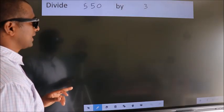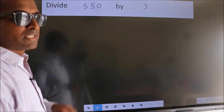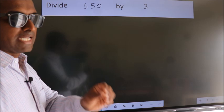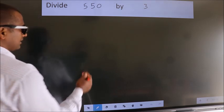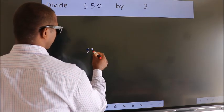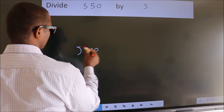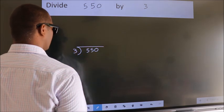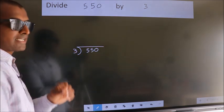Divide 550 by 3. To do this division, we should frame it in this way: 550 here, 3 here. This is your step 1.